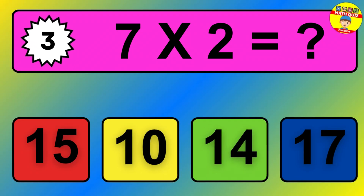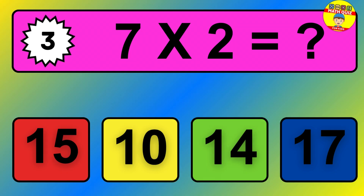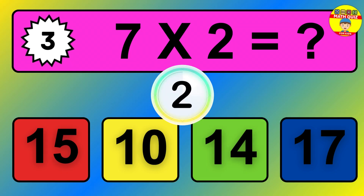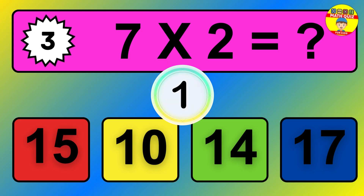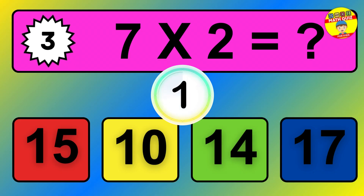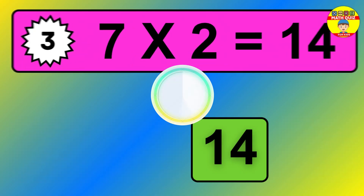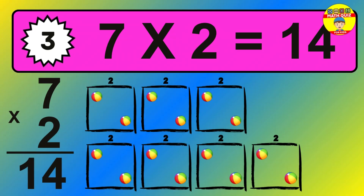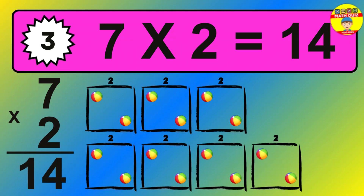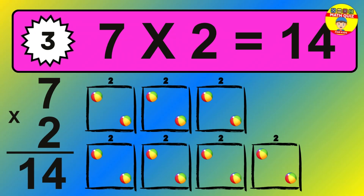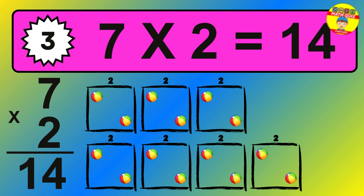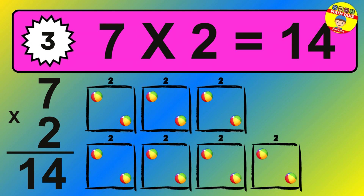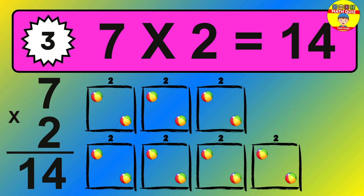Question 3. 7 times 2 equals what? The answer is 7 times 2 is 14. To calculate, we have 7 groups with 2 balls each one. So how many balls do we have? 14 balls.